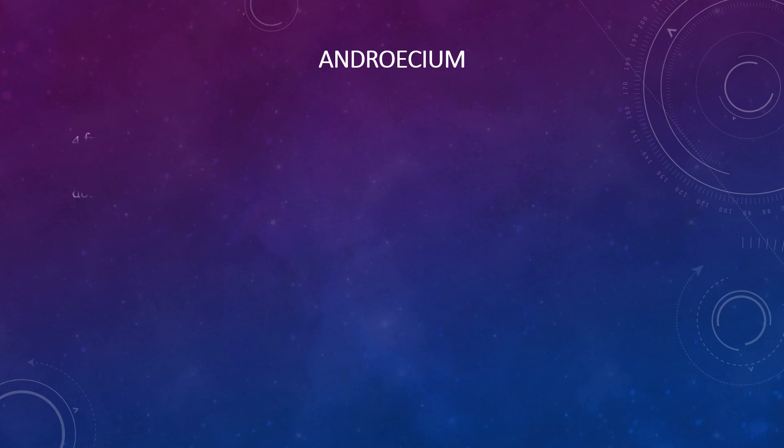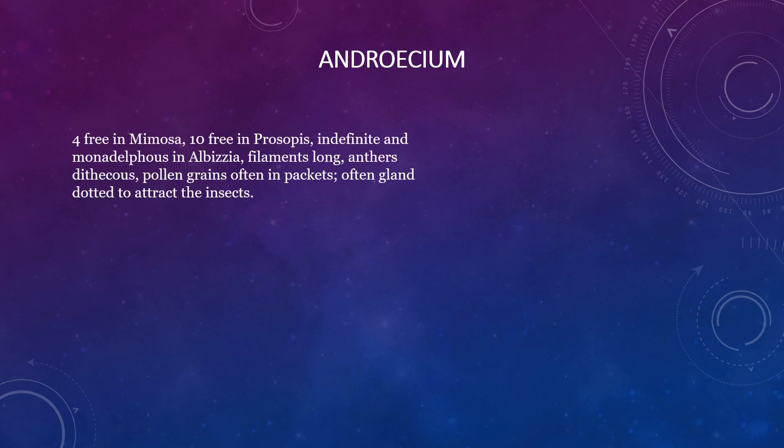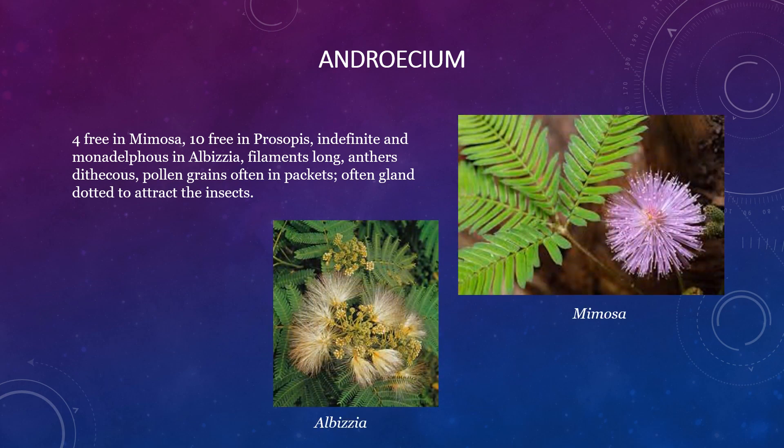Androecium consists of four free stamens in Mimosa, ten free stamens in Prosopis, or indefinite and monadelphous condition in Albizia. Filaments are usually long; anthers are dithecous, that is two-celled. Pollen grains are often in packets and often gland-dotted to attract insects.